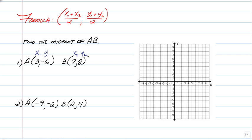So from here, all you're going to do is use the formula. So you substitute your x's in. So you have 3 plus 7 over 2, comma, now substitute in your y's, negative 6 plus 8 over 2.